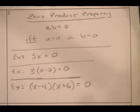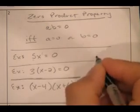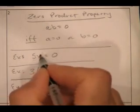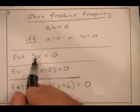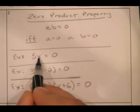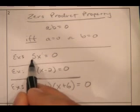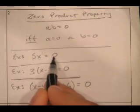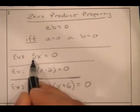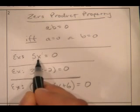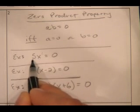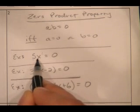For example, if I know that five times x is zero, I know x must be zero. I know one of these must be zero. Five is not zero, so x must be zero. When you have a product that equals zero, one of the factors must be zero.